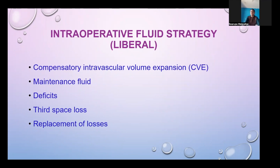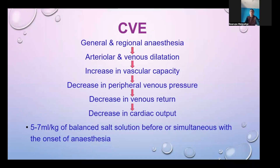The liberal strategy is a combination of compensatory intravascular volume expansion (CVE), maintenance fluid, deficit replacement, third-space loss replacement, and replacement of other losses. Regarding CVE: when anesthesia is administered, both general and regional anesthesia cause arteriolar and venous dilatation, increasing vascular capacity, decreasing peripheral venous pressure and venous return, and thereby decreasing cardiac output.